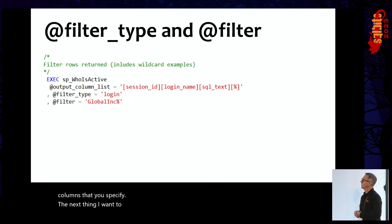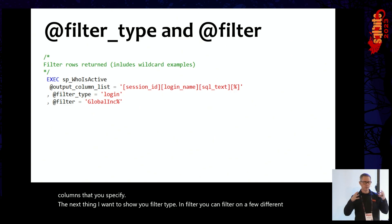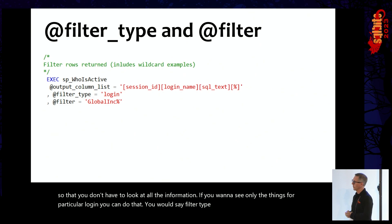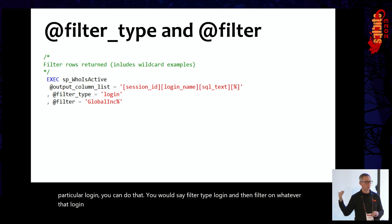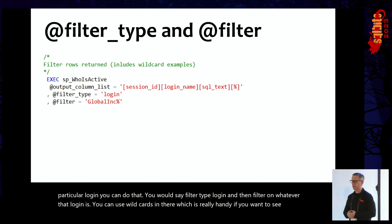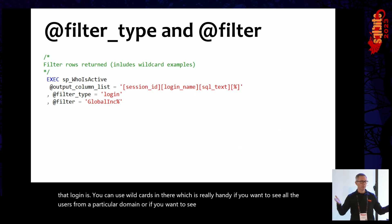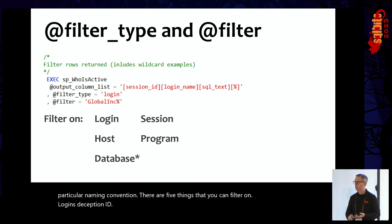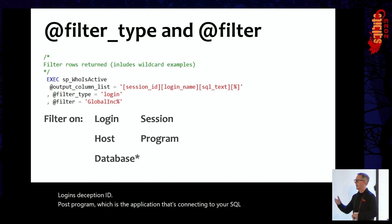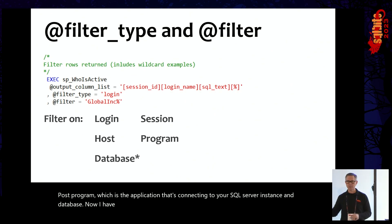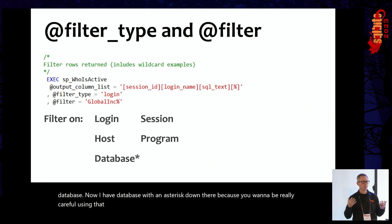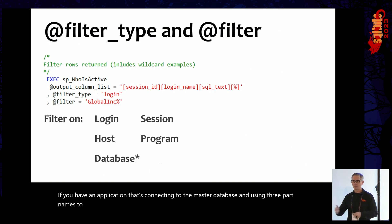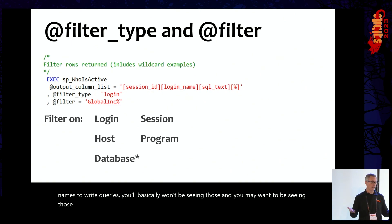Next is filter_type and filter. You can filter on a few different things so you don't have to look at all the information. If you want to see only things for a particular login, you would say filter_type login and then filter on whatever that login is. You can use wildcards, which is handy if you want to see all users from a particular domain or service accounts with a particular naming convention. There are five things you can filter on: login, session ID, host, program — the application connecting to your SQL Server instance — and database. Be careful with database: it only uses the database from the context of the connection, so connections to master using three-part names won't be shown.